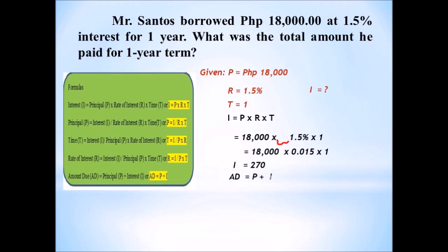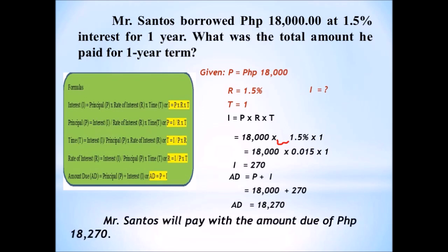To find the amount due in one year term, amount due is equal to the principal amount plus the interest. Substitute: 18,000 plus 270. So the amount due is 18,270. Mr. Santos will pay an amount due of 18,270 pesos for one year term.